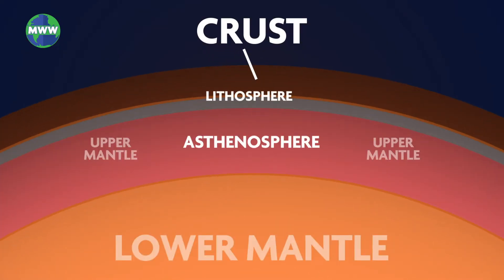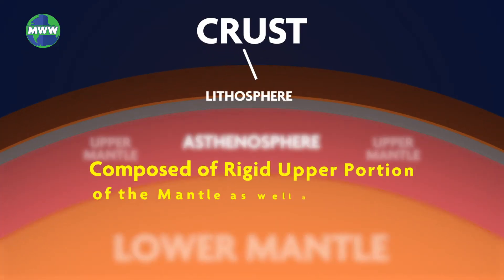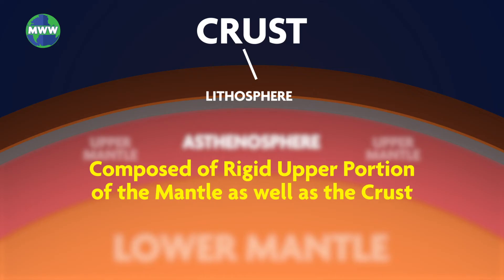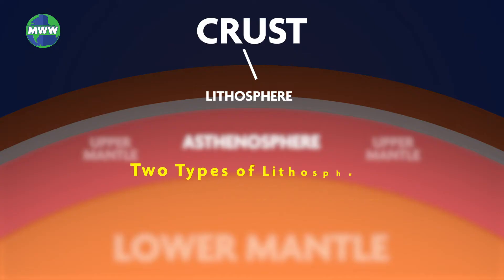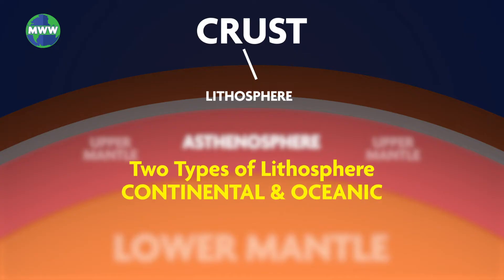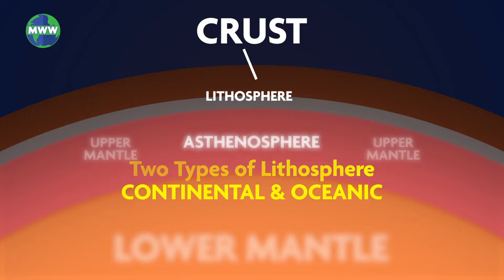The lithosphere is the solid outer part of our planet. It is composed of the rigid upper portion of the mantle as well as the crust, which is the outermost layer of the Earth. There are two types of lithosphere: the continental and oceanic lithosphere, which are part of the Earth's crust.